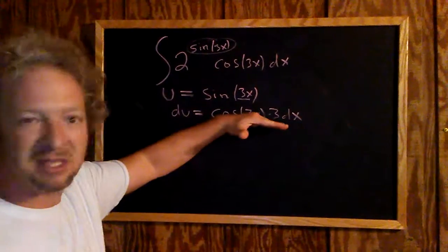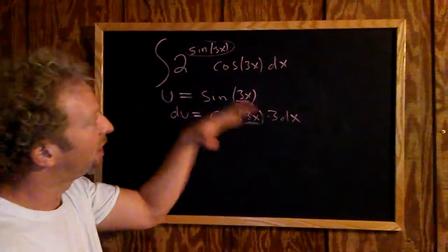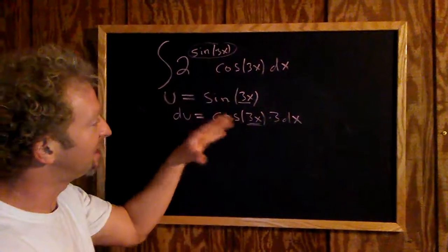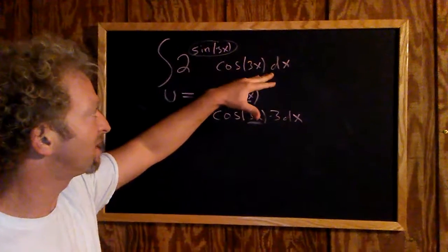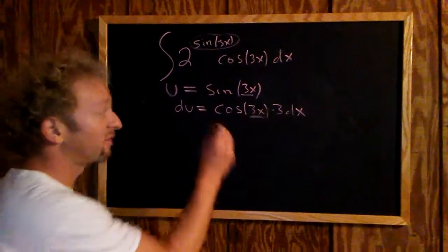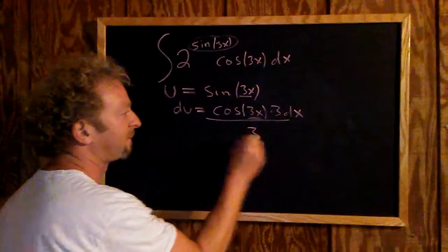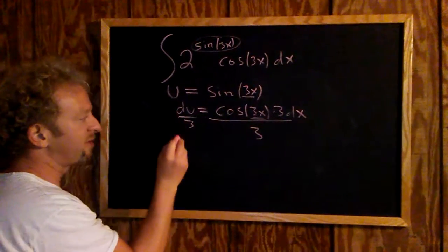To finish, we have to make this look like this. There's a 3 missing, so we'll divide by 3, and so we get 1/3 du.